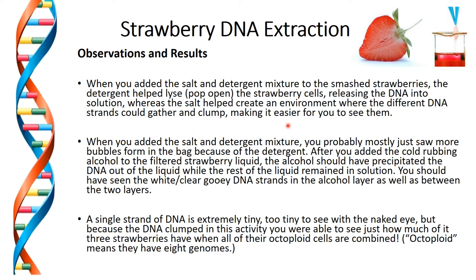When you added the salt and detergent mixture, you probably mostly just saw bubbles starting to form because of the detergent. The bubbles are created by the detergent as the DNA starts to be released from the cells. After you added the cold rubbing alcohol to the filtered strawberry liquid, the alcohol should have precipitated the DNA out of the liquid while the rest remained in solution. You should have seen white, clear, gooey DNA strands — the cloudy material — in the alcohol layer and between the two layers. A single strand of DNA is too tiny to see with the naked eye, but because of DNA's clumping nature in this activity, you were able to see how much DNA the strawberries contain, given that they have octoploid cells with eight genomes.